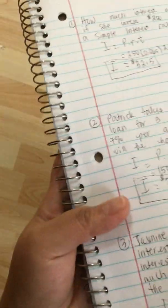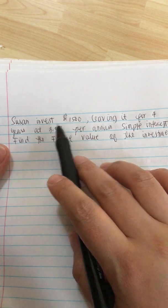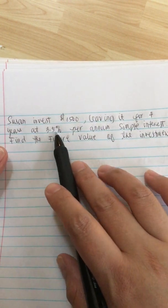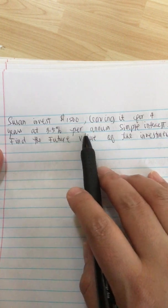So here's the problem. Susan invests $1,500 leaving it for 4 years at 3.5% interest per annum.